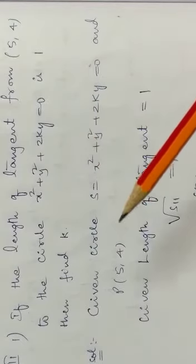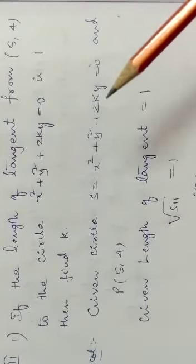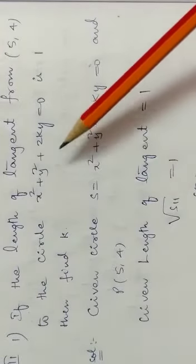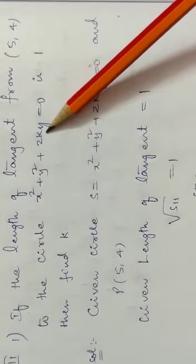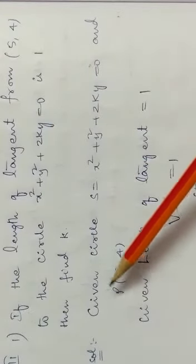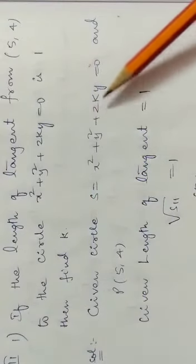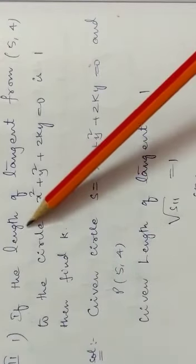Earlier we were given point and had to find length. Now, we're given length and have to find what k value in the circle equation. Given circle is x square plus y square plus 2ky equal to 0, and point 5 comma 4.